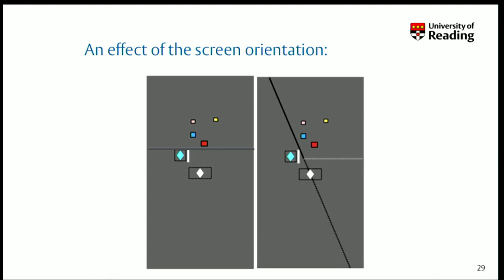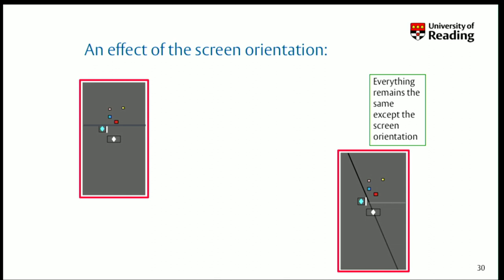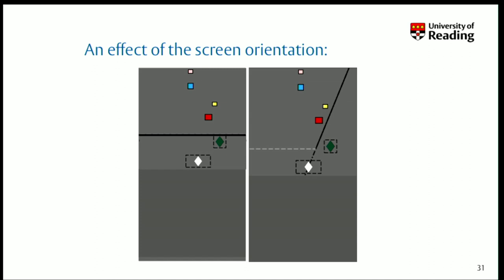Participants behave as if they ignore crucial aspects of the geometry of the scene — all the depth relative to each other, they just ignore. Their responses suggest they assume the objects lie in a plane, which is bizarre. So let's test that. In a new experiment we keep everything the same — the pattern of boxes, their location, the start location, the pointing location — and the only thing we change is the screen orientation. If the model is valid, that should predict a big change when you rotate the screen. When we plot the data from those two conditions against each other, they're no longer lying along the 45-degree line — you get quite a different pattern of errors.